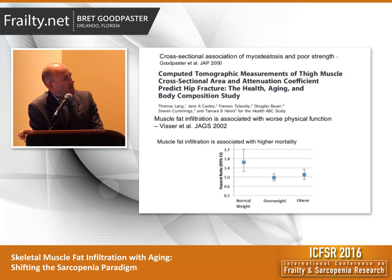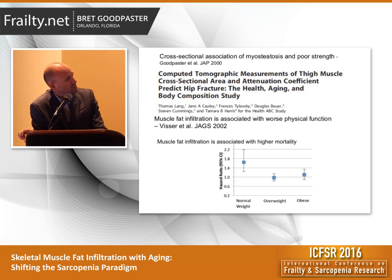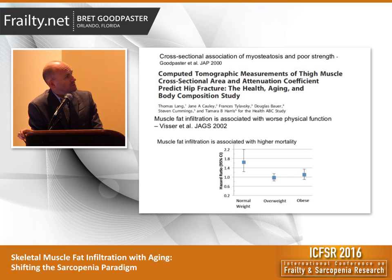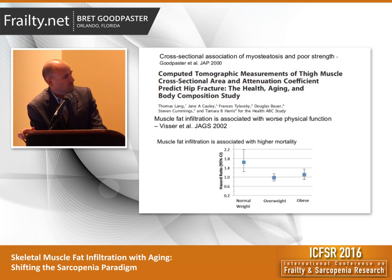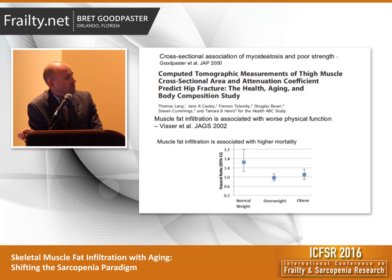Just to highlight a few studies along the way showing that cross-sectional myosteatosis is associated with poor strength — Health ABC also showed an association between muscle fat infiltration by muscle attenuation and hip fracture, associated with worse physical function. Marjolin Visser wrote some really nice papers on that. And ultimately, this is unpublished data showing that muscle fat infiltration is also associated with higher mortality in these older men and women.